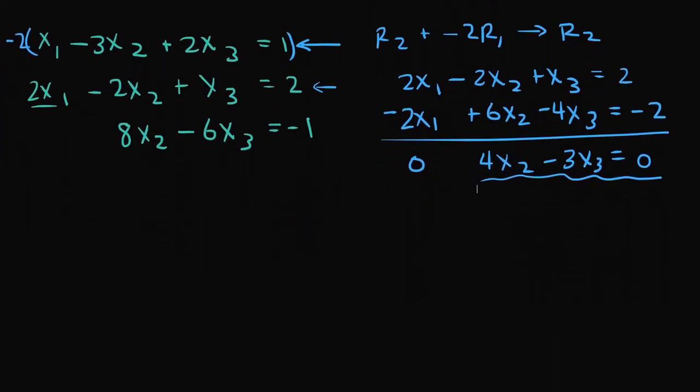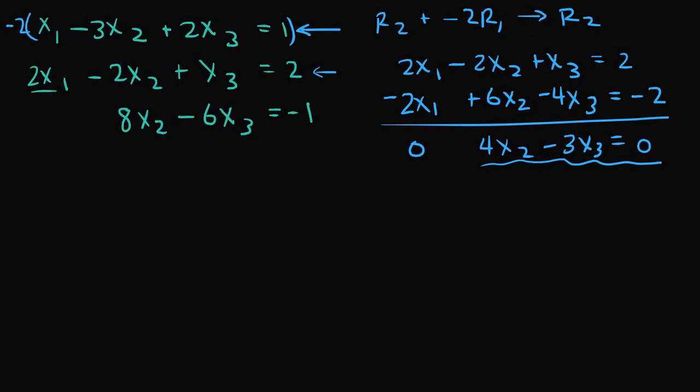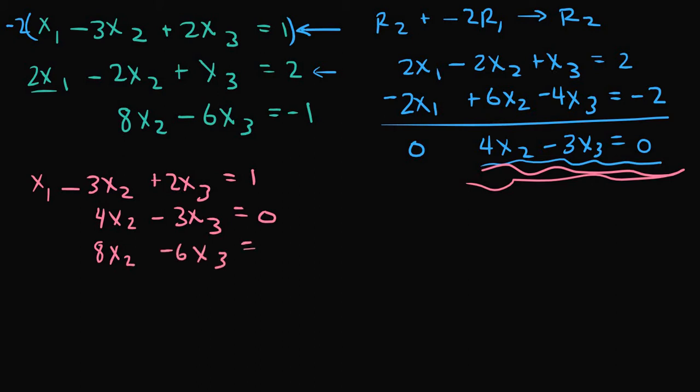Now let me scroll down a bit, make some more room, and we can write our new equivalent system here. So we have x1 minus 3x2 plus 2x3 is equal to 1. 4x2 minus 3x3 is equal to 0. That was this new equation here. And our third equation was 8x2 minus 6x3 is equal to negative 1.